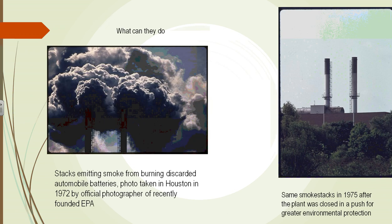Looking at two pictures here, you can see in just a few short years what the EPA accomplished. On the left you can see smoke coming from burning discarded on-road batteries — it's hard to imagine the pollution that produced. Just three years later, those same smokestacks show every plant was shut down or upgraded to achieve better environmental protection.